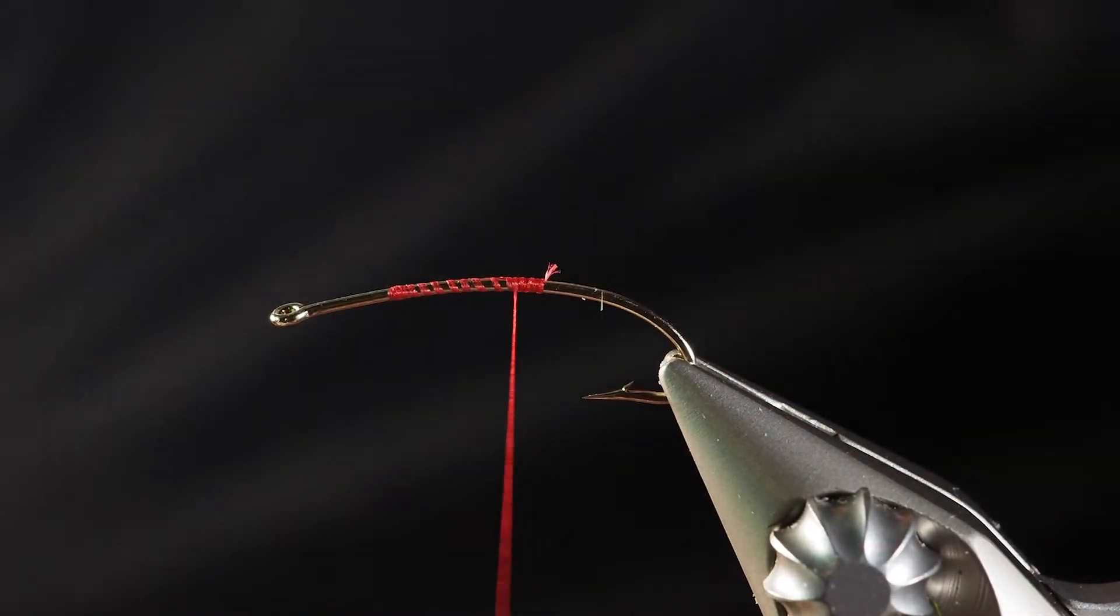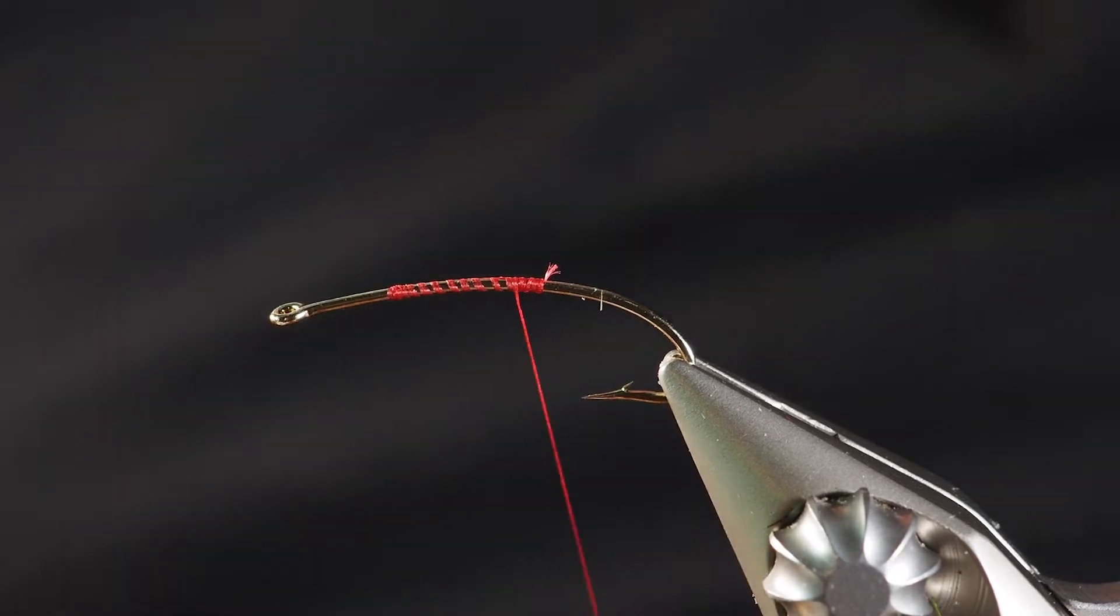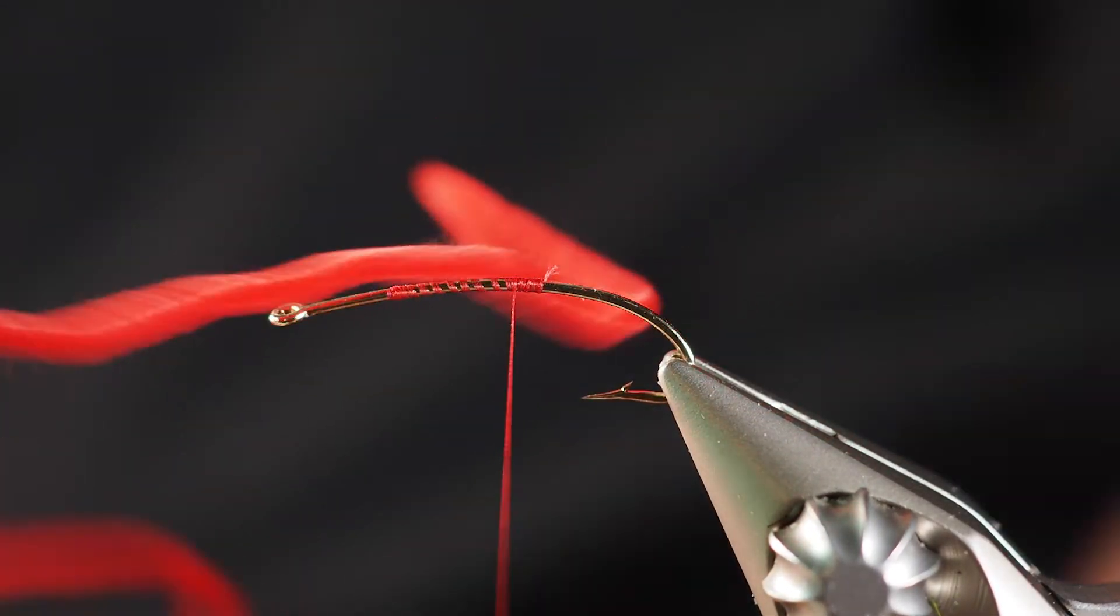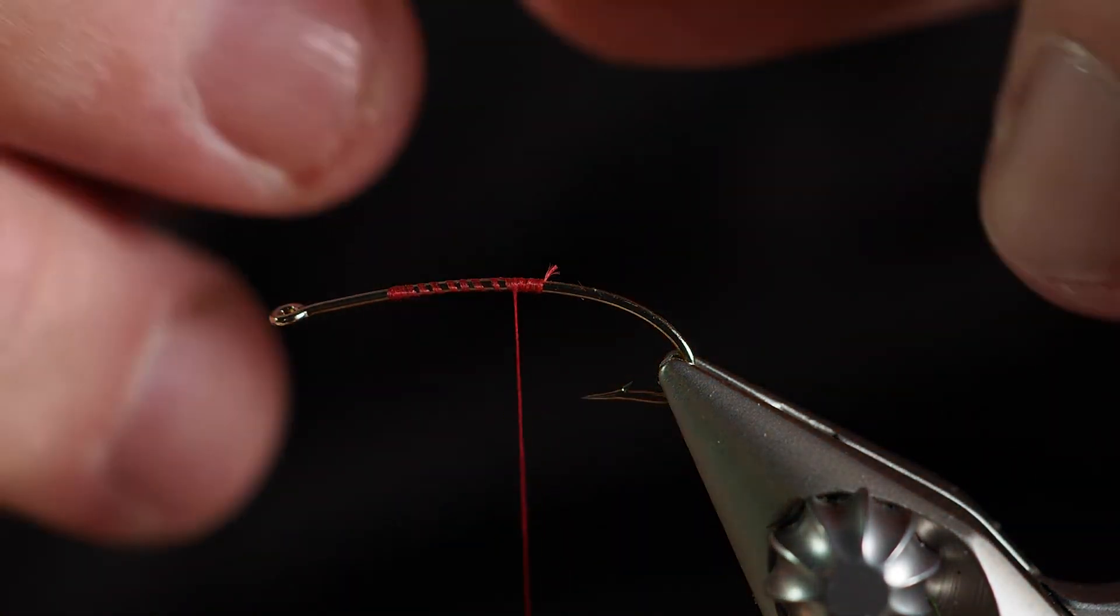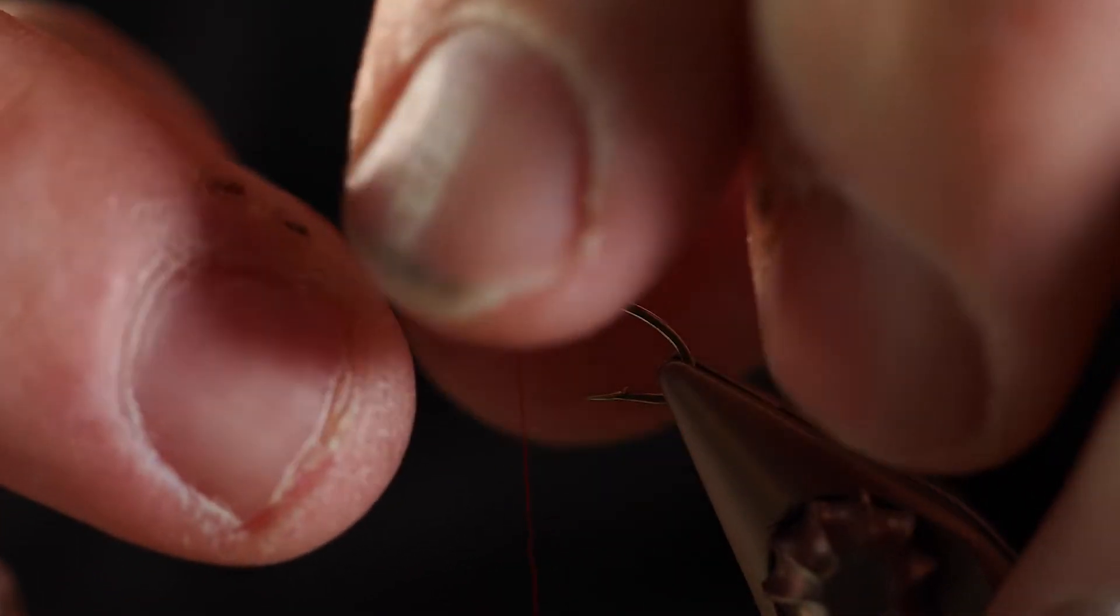So I've got my thread attached to my hook. I have red thread and I have the really red ultra chenille. I want that chenille to be just a little bit longer than the body here, but for demonstration purposes we'll probably make it a little bit shorter.